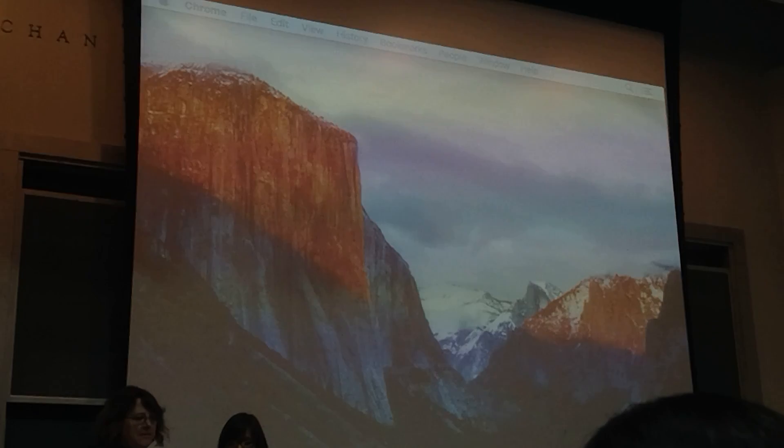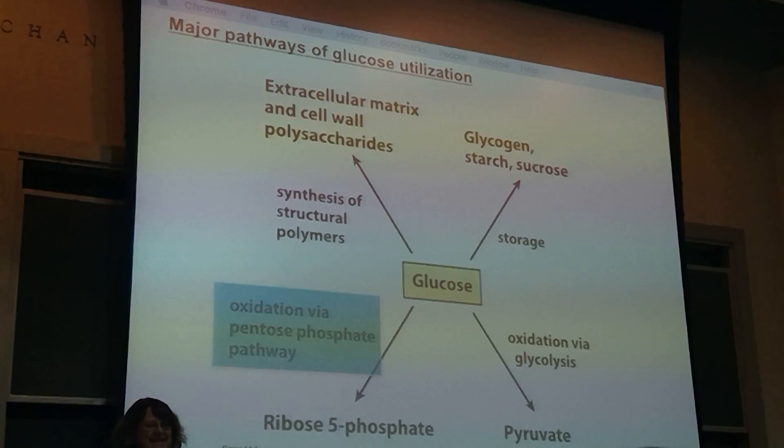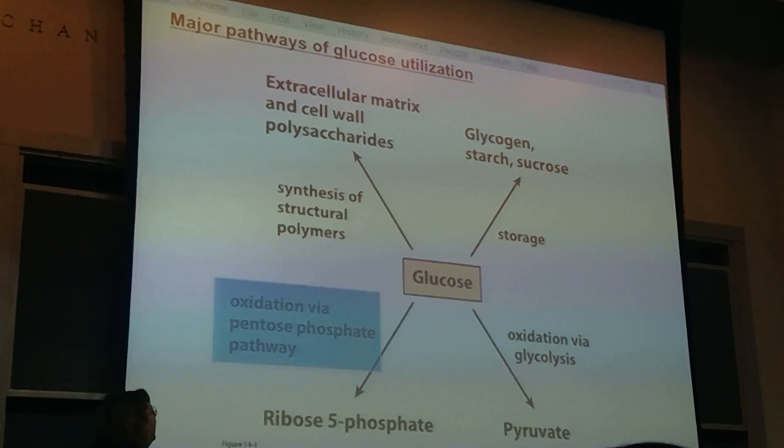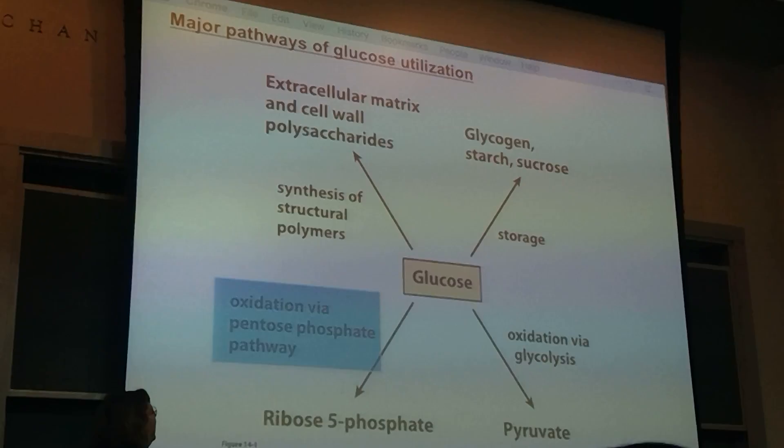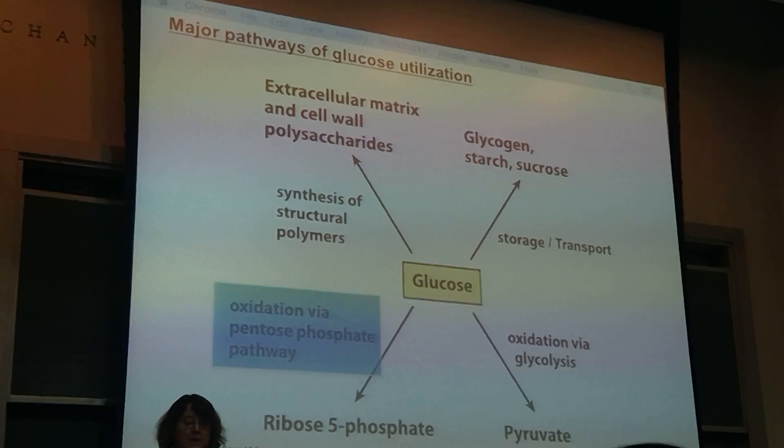Now we're moving on to the oxidative pentose phosphate pathway. We're going to be talking about glucose going to ribose-5-phosphate, which can be used to make nucleic acids and NADPH. It's done via the pentose phosphate pathway — you might see PPP as an abbreviation. Basically, you're producing pentoses and NADPH for biosynthesis.